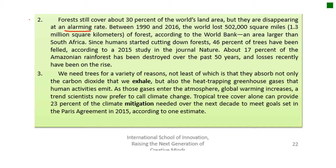Since humans started cutting down trees, 46% of trees have been felled — cut down — according to a 2015 study in the journal Nature. About 17% of the Amazonian rainforest has been destroyed over the past 50 years, and losses recently have been on the rise. If you've been listening to the news or on social media, you can see what's happening to the Amazon. What happened last year was pretty tragic — fires that were purposely started in order to clear this land for farms, construction, and other businesses.